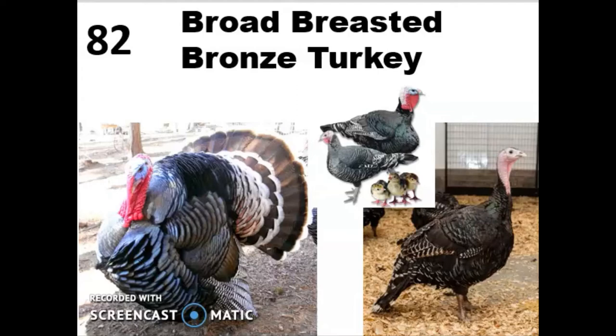They get their coppery or metallic brown color from their wild ancestors, but they were selectively bred to have shorter legs and shorter keels, which caused these animals to no longer be able to breed naturally — so the only way to produce them is through artificial insemination. These were really popular up until the 1960s, when consumers started preferring a larger, cleaner-looking turkey with no dark pin feathers, and the industry switched over to mostly broad-breasted white turkeys.